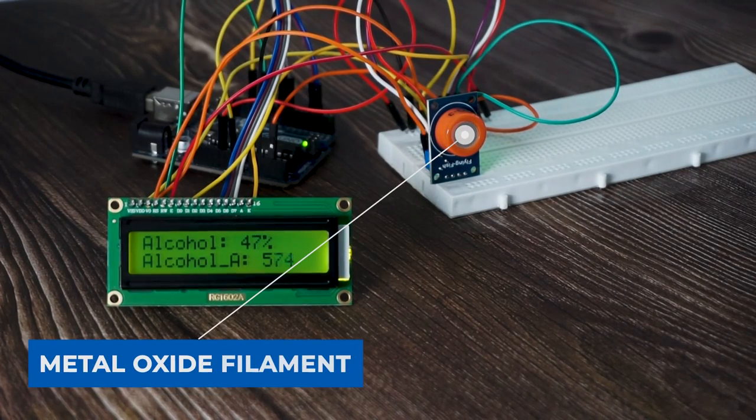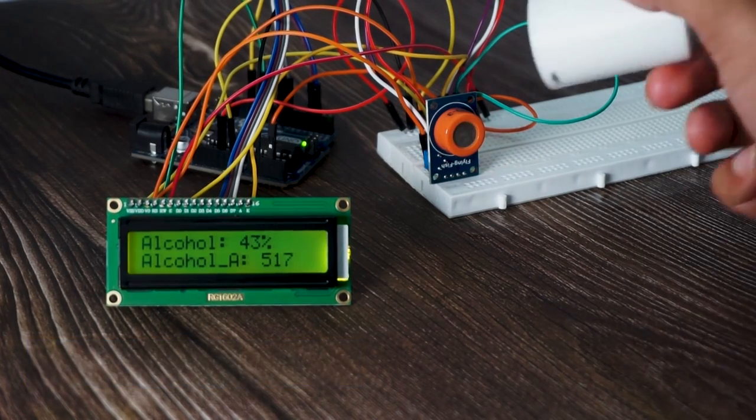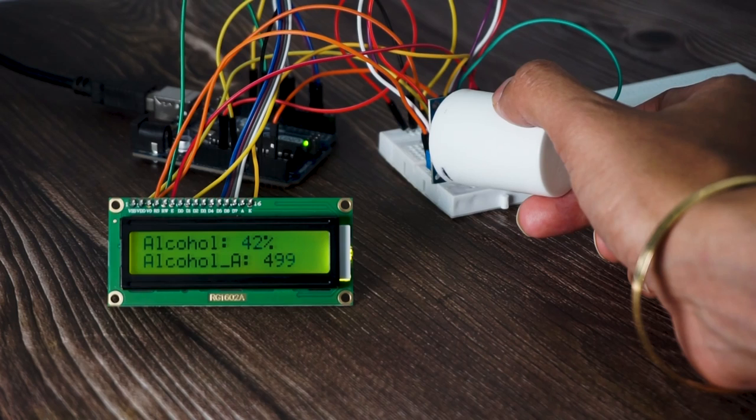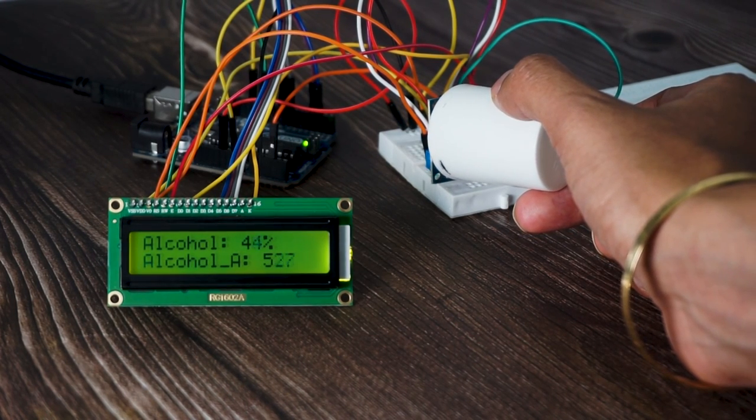The metal oxide filament used in this sensor shows a change in resistivity on exposure to alcohol. With an increase or decrease in alcohol concentration, we get an analog resistance output from this sensor.